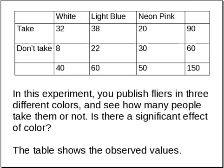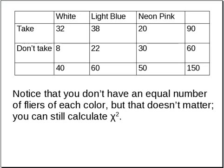Here's another experiment. In this experiment, you publish flyers in three different colors and see how many people take them or don't take them. Is there a significant effect based on color? The table shows the observed values. Notice that you don't have an equal number of flyers of each color, but that doesn't matter — you can still calculate chi-squared.